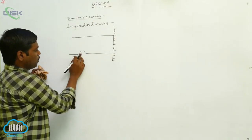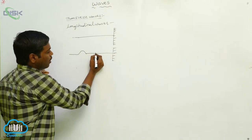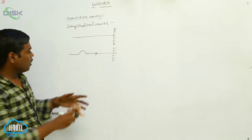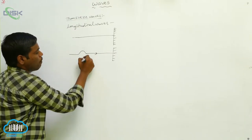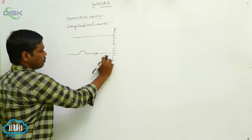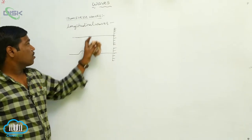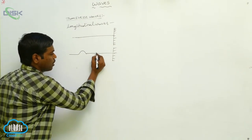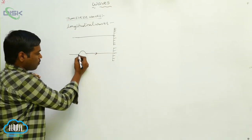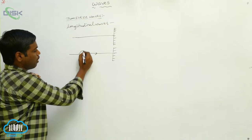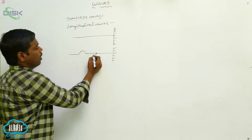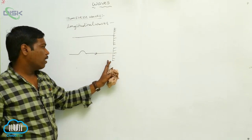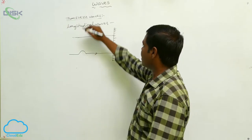Only this pulse is produced in the string. The total wave is moving along this direction. The pulses are moving perpendicular to the propagation of the wave direction. This is called a transverse wave. When a pulse is moving, this pulse is moving along this direction and then this pulse is perpendicularly moving along the direction of the wave. This is called a transverse wave.